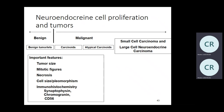The main distinguishing features are mitotic figures and necrosis. Less than 2 mitoses per 10 HPF at 40x = carcinoid. Between 2 and 10 mitoses = atypical carcinoid. More than 10 mitoses per 10 HPF — so on average at least one per field — that's large cell or small cell neuroendocrine carcinoma. Large cell and small cell neuroendocrine carcinomas have necrosis; atypical carcinoids may have some necrosis. Atypical carcinoids act more like small cell than carcinoid. Neuroendocrine markers to know: CD56, synaptophysin, chromogranin.